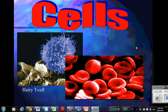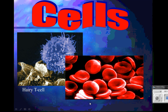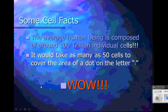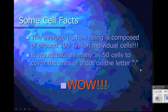This show is about cells. This is a T cell that's in your body, in your bloodstream, and this is a red blood cell. The average human being is composed of around 100 trillion individual cells, and it would take as many as 50 cells to cover the area of a dot on the letter I. That's why we need microscopes to examine the cells.